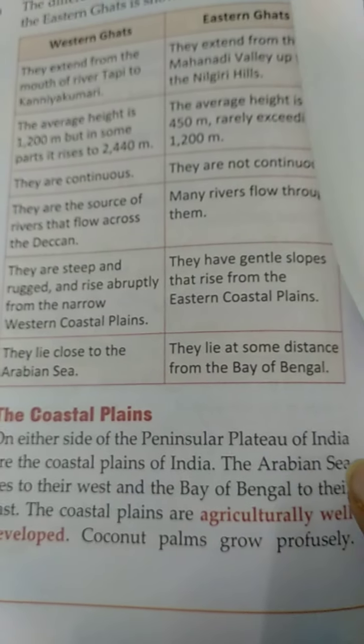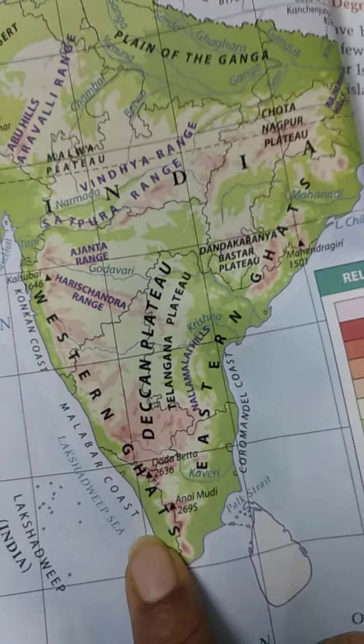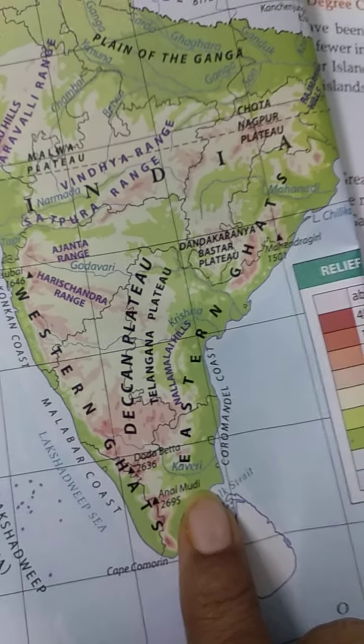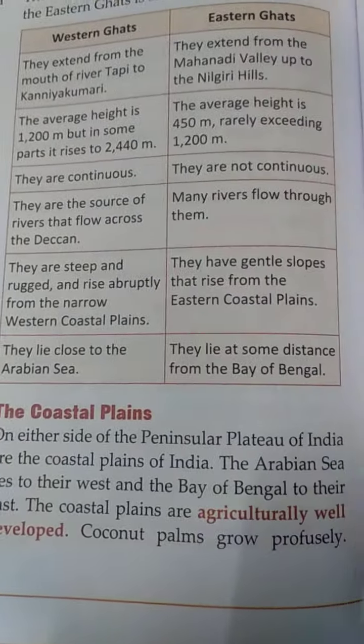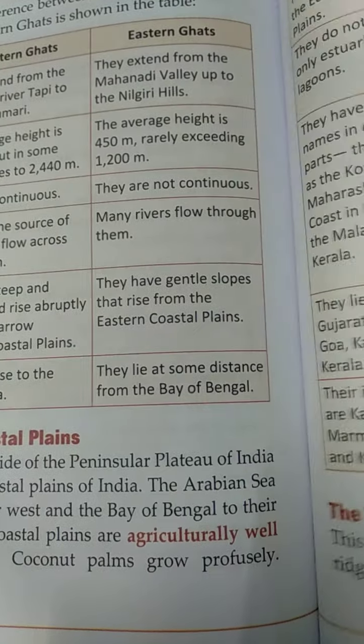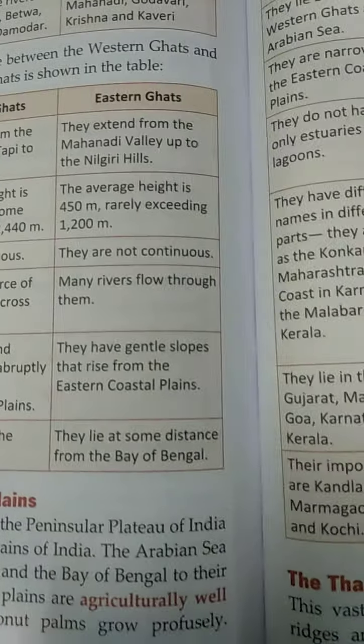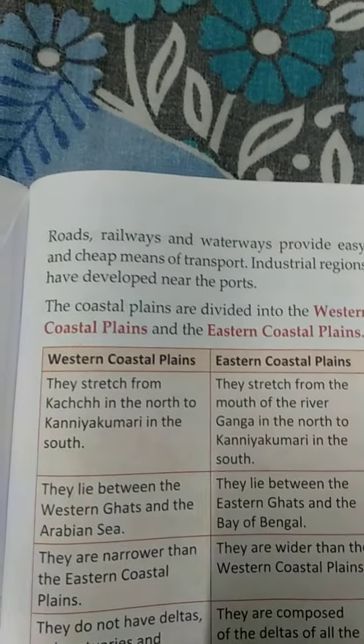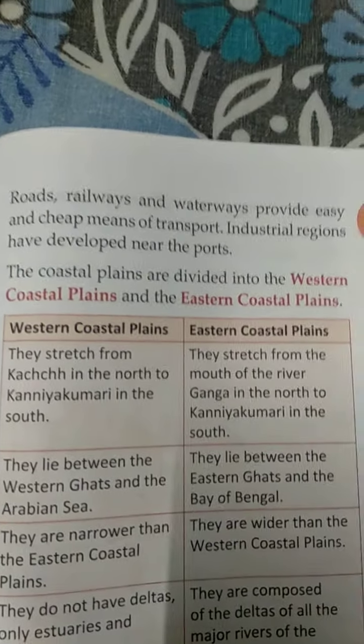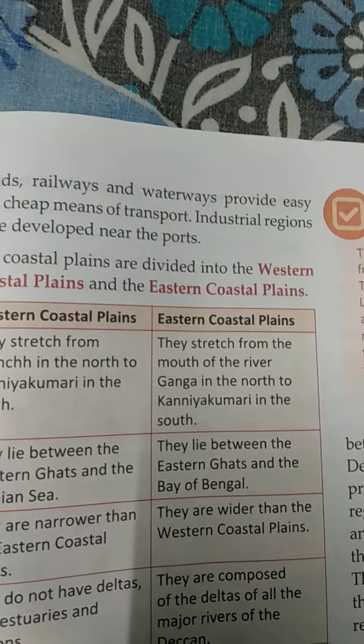The Coastal Plains are agriculturally well developed — the green portions you can see are used for agriculture. The western side is narrow and the eastern side is broad, but agriculture is done even in the narrow portion. Coconut plants and palms are found in abundance in this area. Being coastal areas, waterways are easily available and are a cheap means of transport.